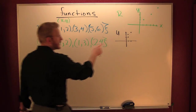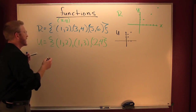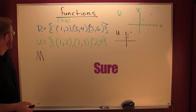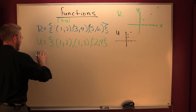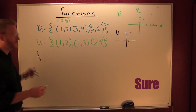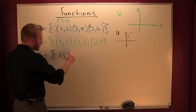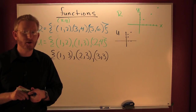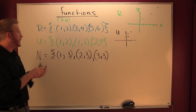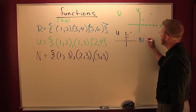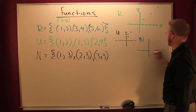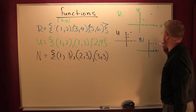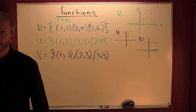We are putting in our x values and getting out our y values. Let's do one more relation — call it N. Maybe we had something like one goes to three, two goes to three, and three goes to three. Let's take a look at that relation and check whether or not it's a function. Let's plot our N relation in blue: one goes to three, two goes to three, and three goes to three. So we plotted those three points. These are relations.